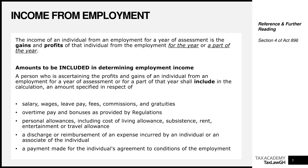To help us understand how to determine employment income, the law gives us some guidance — not an exhaustive list, but items that shall be included. The law says anyone ascertaining the gains and profits of an individual from employment for a year or part of a year shall include: salary, wages, leave pay, fees, commission, and gratuity.